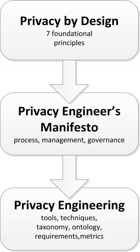Privacy engineering is an emerging discipline within the software or information systems domain which aims to provide methodologies, tools, and techniques such that the engineered systems provide acceptable levels of privacy. In the US, acceptable level of privacy is defined in terms of compliance to the functional and non-functional requirements set out through a privacy policy, while in the EU, the General Data Protection Regulation sets the requirements that need to be fulfilled. In the rest of the world, the requirements change depending on local implementations of privacy and data protection laws.